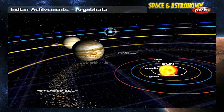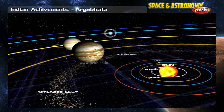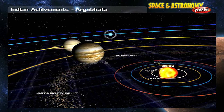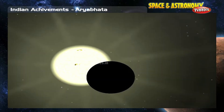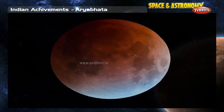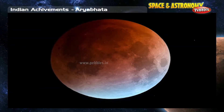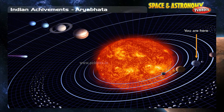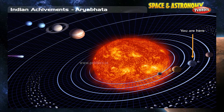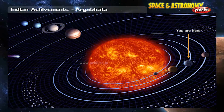He discovered that the planets don't orbit the sun at a uniform velocity and accurately calculated many astronomical constants based on this model, such as the solar and lunar eclipses and the velocities and instantaneous motions of the planets.